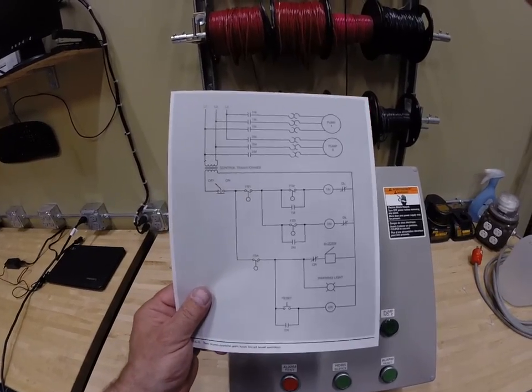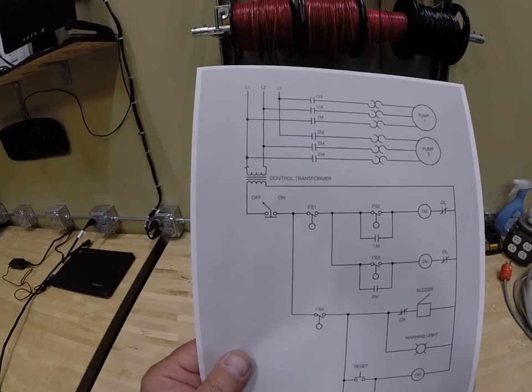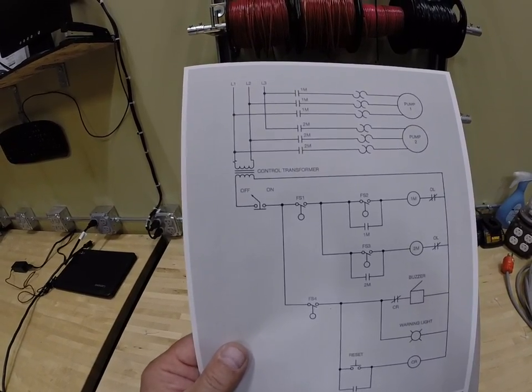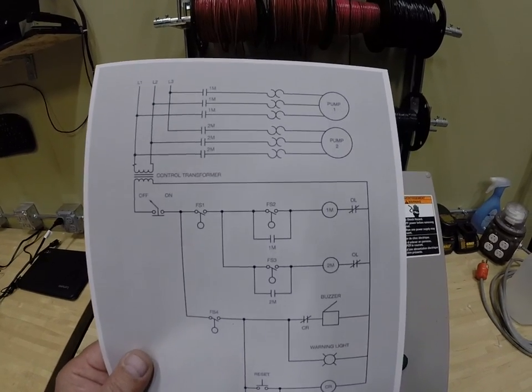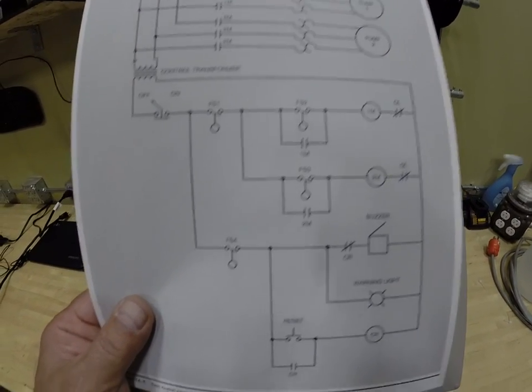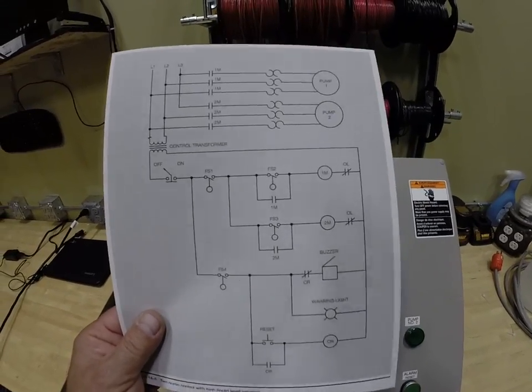You'll notice there's some very typical symbols that you've seen. There's a selector switch, upper left, says on-off. FS1 is float switch number one, float switch number two, float switch number three, and float switch number four. So you've actually got four different float switches.